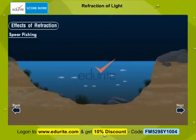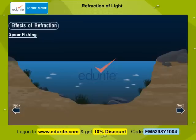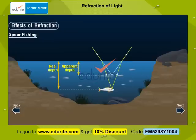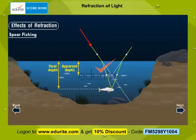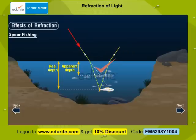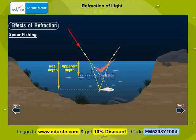During spear fishing, the fisherman aims at the tail of the fish. When a fish in clear water is viewed from an angle, its image appears ahead of its actual position, as it is raised up due to refraction of light from water to air. Thus, if the fisherman aims at the head of the image of the fish, the spear will hit in front of the actual fish. However, if the aim is at the tail of the image, it is likely to hit the head of the actual fish. Go through the ray diagram to understand this.